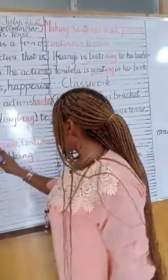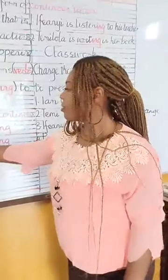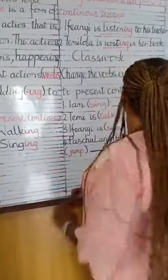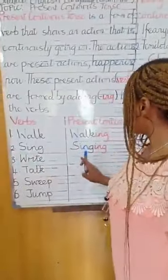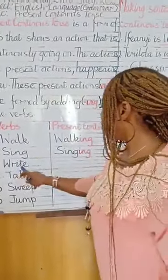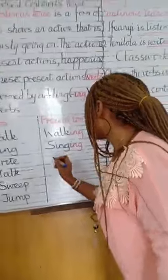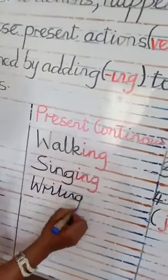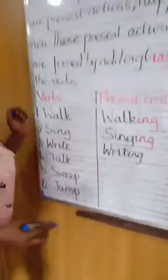Now let me look at some verbs and present continuous actions. Work — you add -ing to make it present continuous tense, and it's working. Sing — singing. Write — you add -ing to make it writing. Talk — as I'm talking now, so it's talking. It's happening now.